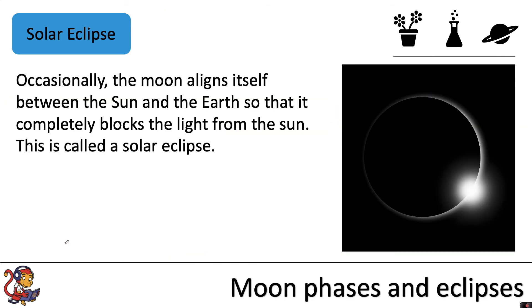Occasionally the Moon aligns itself between the Sun and the Earth so that it completely blocks the light from the Sun. And this is called a solar eclipse.